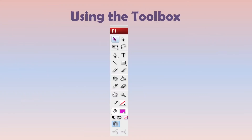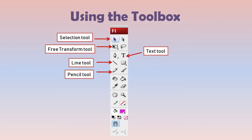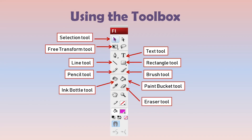Now let's move on to the next topic: using the toolbox. The toolbar, also called the toolbox, contains a variety of tools. For example, to select objects you have the selection tool and free transform tool. Similarly, you have the line tool, pencil tool, text tool, rectangle tool, and brush tool, which help you create objects. In addition, you have the ink bottle tool, paint bucket tool, and eraser tool, which help you fill color inside objects or make changes to their outlines.